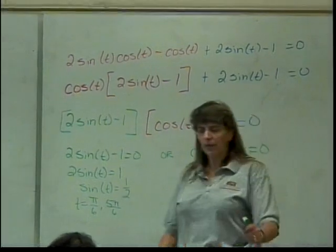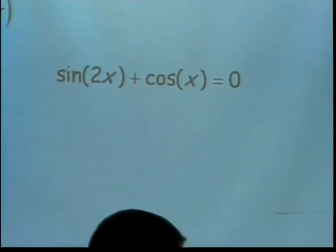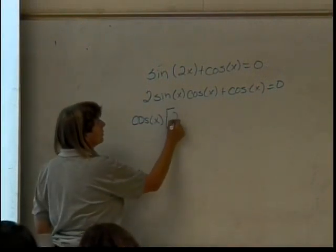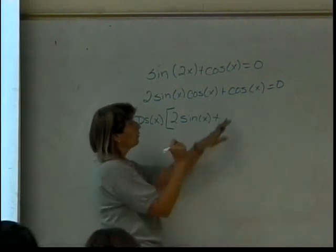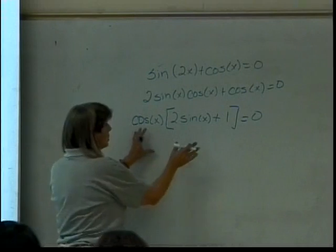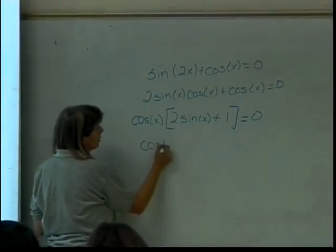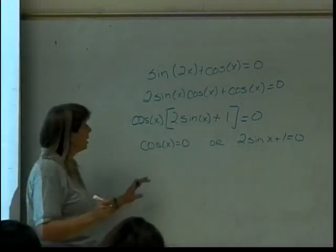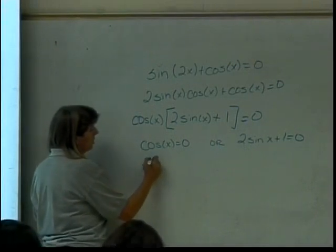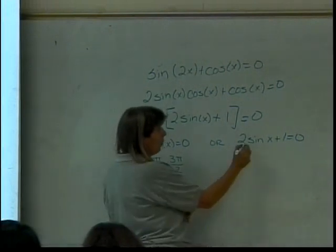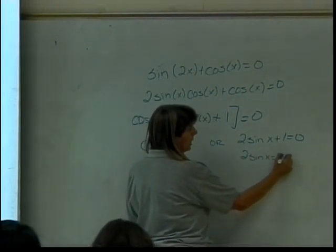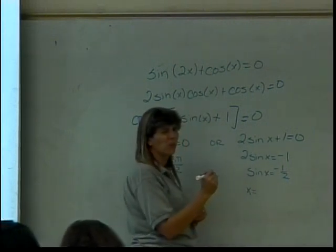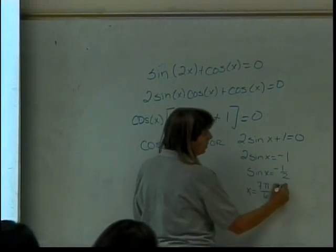Let's try this next one. We can factor out a cosine of x because there's one in each piece. That leaves us with 2 sine of x here and a plus 1 here. Two things multiplied together equal 0, so one of them is 0. Cosine of x equals 0, which happens when x is pi over 2 or 3 pi over 2. Or 2 sine of x plus 1 equals 0, so sine of x equals negative 1 half — that's quadrant 3: 7 pi over 6, and quadrant 4: 11 pi over 6.